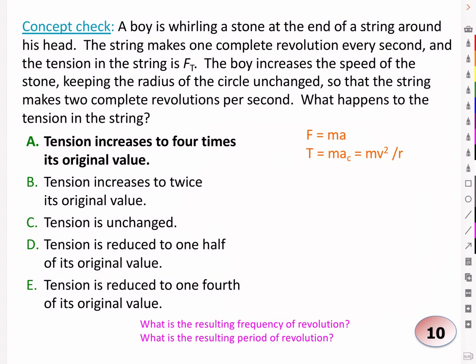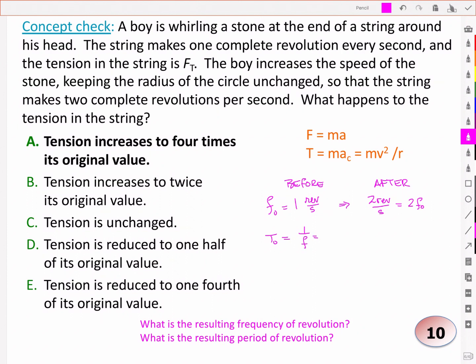So I'll add to that, what is the resulting frequency of revolution, and what is the resulting period of revolution? Well, let's look at before and after. We had a frequency that was equal to one revolution per second, and we doubled that to a frequency that was two revolutions per second. So we now have twice the frequency. The period of revolution is one over the frequency, and so that's one over one revolution per second, and that then went to one over two revolutions per second. In other words, it went to one half of the original period. So we doubled our frequency, but the resulting period of revolution is one half of what it was before.